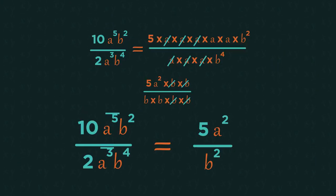You don't need to write out all of the letters every time. You can just look at the powers. So, 5 subtract 3 leaves 2 on top. And 4 on the bottom, subtract 2, leaves 2 on the bottom.